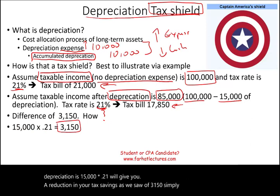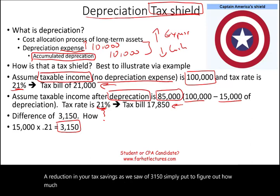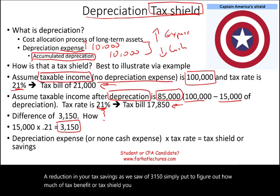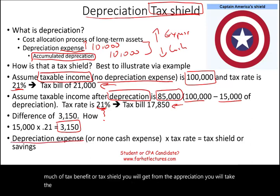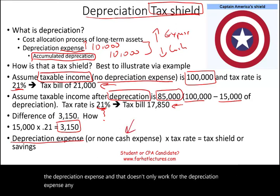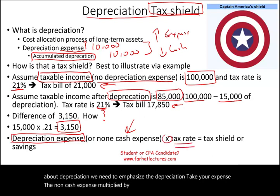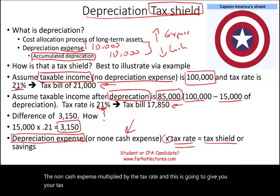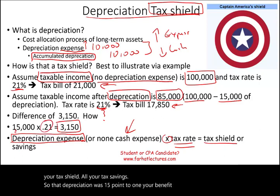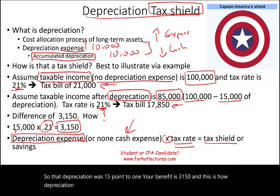Simply put, to figure out how much tax benefit or tax shield you get from depreciation, take the depreciation expense — and this works for any non-cash expense — and multiply it by the tax rate. This gives you your tax shield, or tax savings. With depreciation of $15,000 and a 21% tax rate, your benefit is $3,150. This is how depreciation shields us, protects us, and reduces our income tax bill.